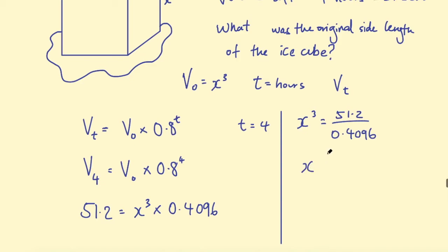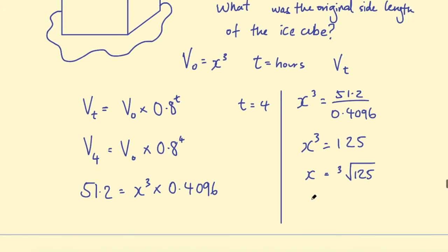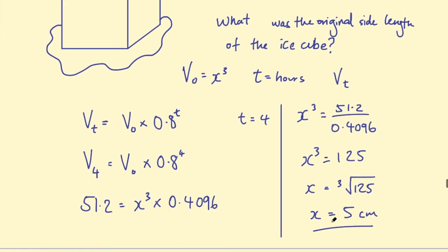And if we put that into a calculator, 51.2 divided by 0.4096, that's 125. And then we can take the cube root of both sides. So the cube root of x³ is just x, and we need to find the cube root of 125. The cube root of 125 is 5. So now we know the original side length of the cube is 5 centimeters.